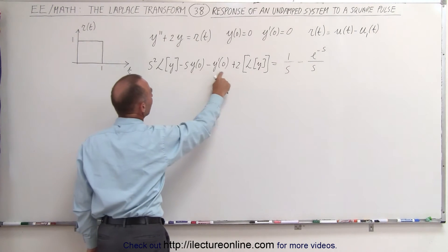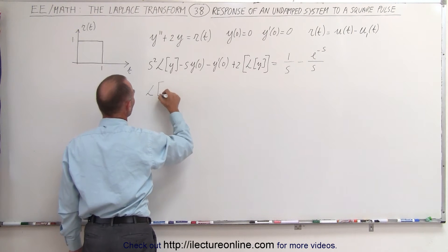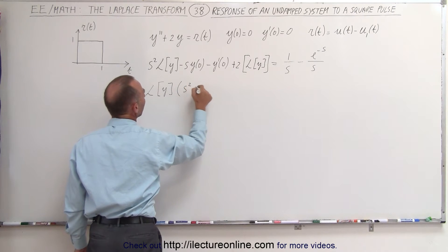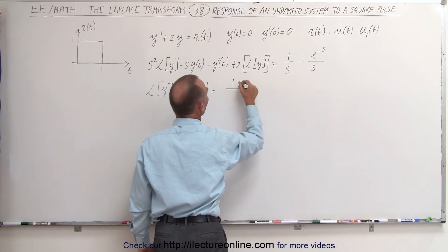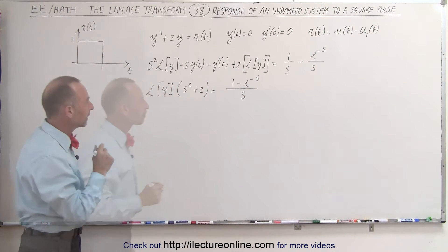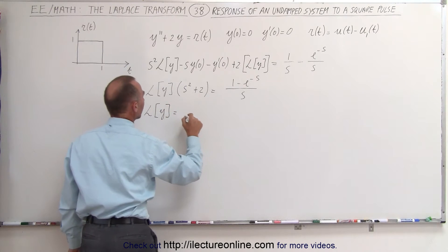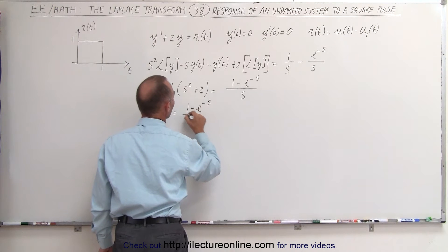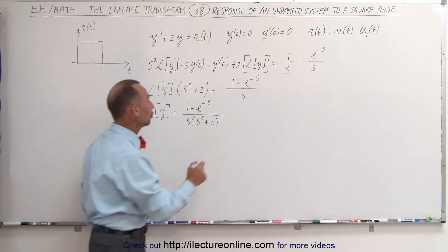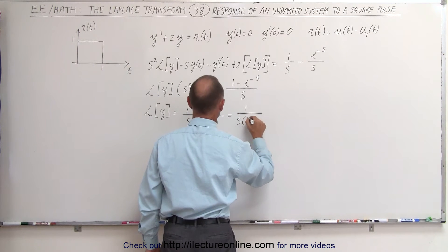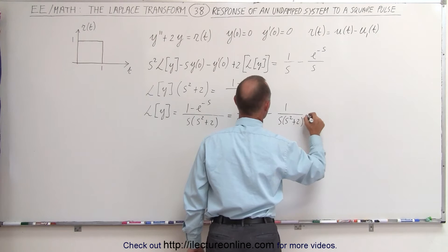Simplifying, and realizing that those two initial condition terms are equal to zero, we end up with the Laplace transform of y times s squared plus two, equal to one minus e to the minus s over s. Dividing both sides by s squared plus two, the Laplace transform of y equals one minus e to the minus s divided by s, all divided by s squared plus two. We separate this into one over s times s squared plus two, minus one over s times s squared plus two times e to the minus s.